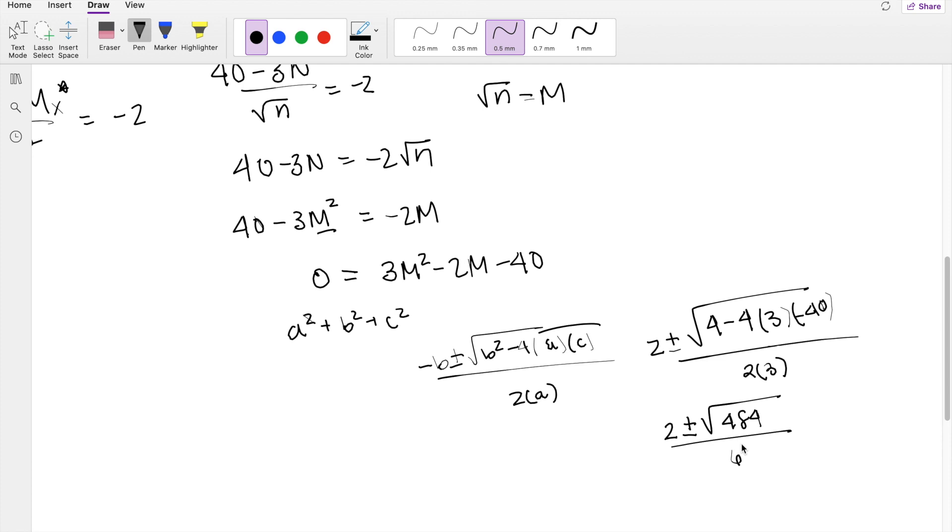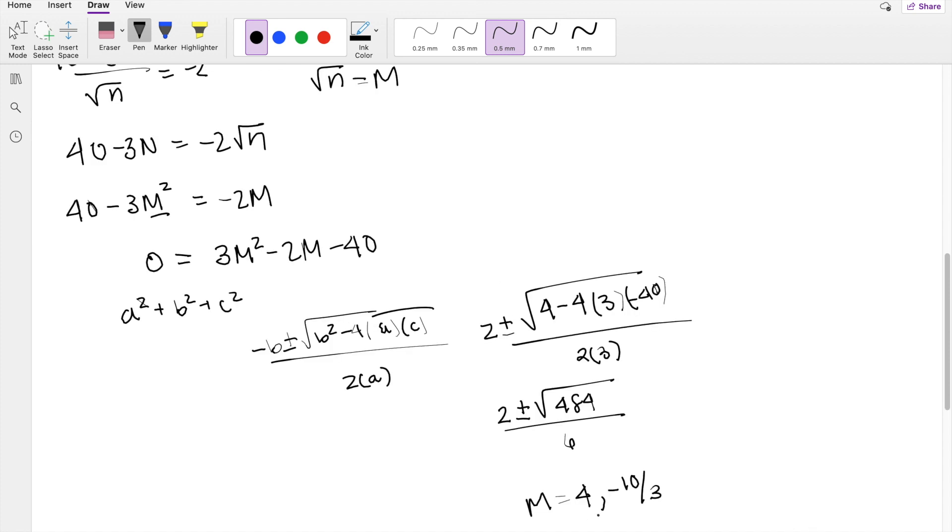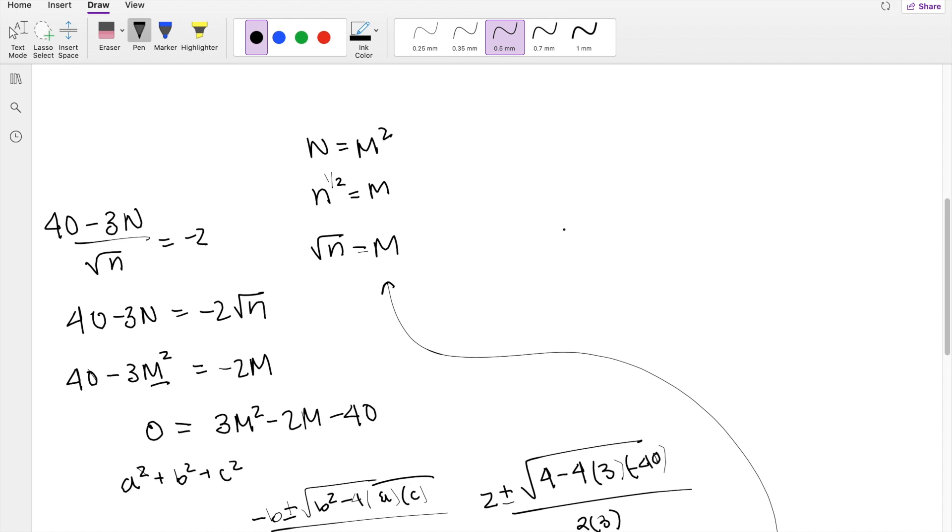So the two answers you're going to get is m is equal to 4, or m is equal to negative 10 thirds. But then we know that what we're looking for is n, so we have to put it back into this thing right here. So then if m is equal to 4, then n must be equal to m squared, which is 16.